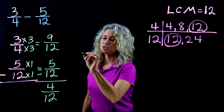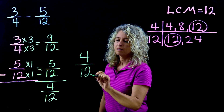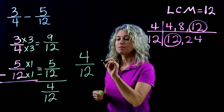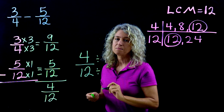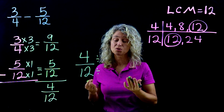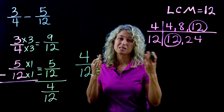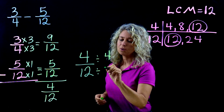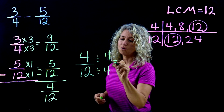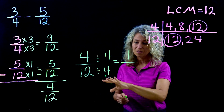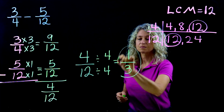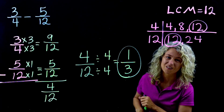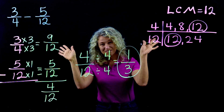4/12 needs to be simplified. What is the greatest factor that can divide both top and bottom? You could use 2, but that wouldn't be your greatest and you'd have to simplify again. Use 4 — the greatest factor: 4 divided by 4 is 1, and 12 divided by 4 is 3. So your answer is 1/3. Alright, bye — I hope this helps!